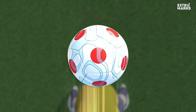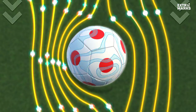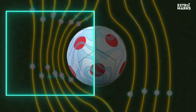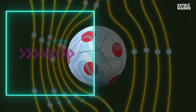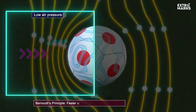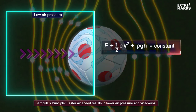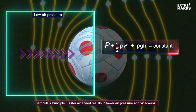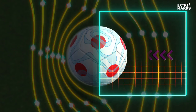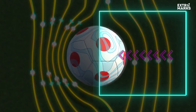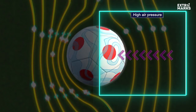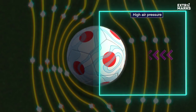As the ball moves forward through air, air flies around the ball from the front to the back. The air will move faster around one side of the ball, resulting in less air pressure on that side. This is because faster air speed results in lower air pressure, according to Bernoulli's principle. The speed of air around the other side is slower due to the spin against the airflow, thereby resulting in more air pressure on that side of the ball.